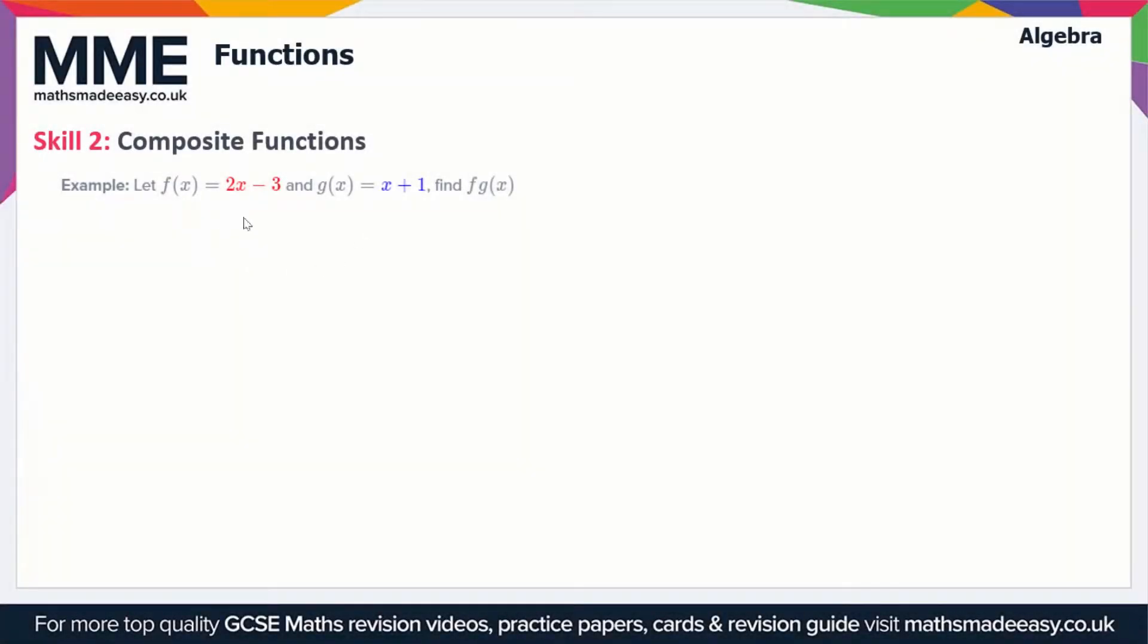This is a similar skill, but here we've got two different functions and we want to find a compounded version of the two. In this example, we have f(x) which is equal to 2x - 3, and we have g(x) which is equal to x + 1, and we want to find fg of x.